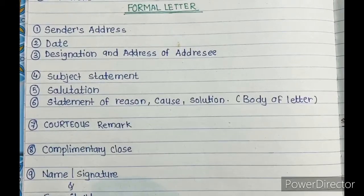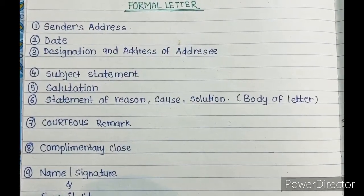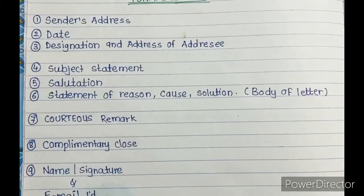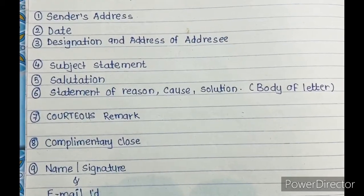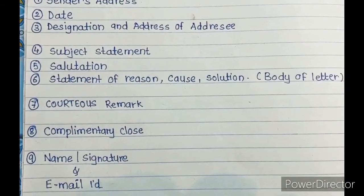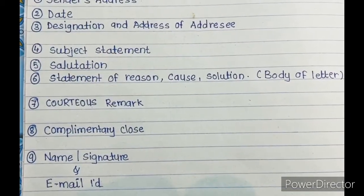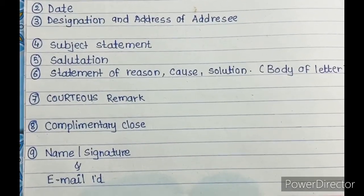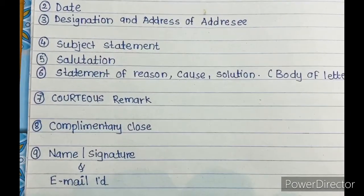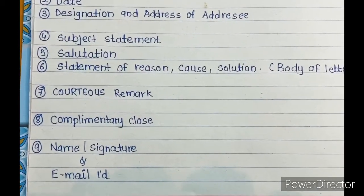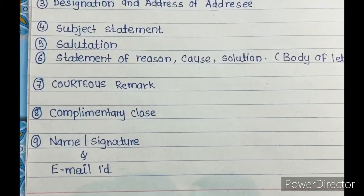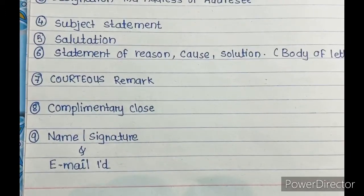Next one is formal letters. The things which are very important while writing formal letters are: First we have to write the sender's address. Then we have to mention the date. Then the designation and address of whom we are writing the letter. The fourth one is the subject statement, which should be one sentence only. Then next one is the salutation. Then next one is the statement of reason, cause, or solution. In a simple way we call it the body of the letter. Then the next one is a courteous remark. And after that the complementary clause should be there. And last but not least is the name and signature.